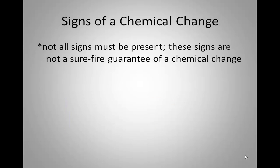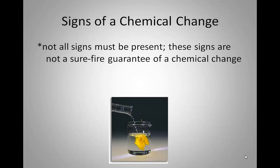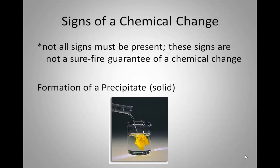Our last sign is probably the hardest to conceptualize because it's not something you see very often. If you take two liquids — two solutions — and in this example we start with two colorless solutions, pour them together, and all of a sudden there's a yellow solid in the solution — where did that come from? That's called a precipitate. So a formation of a precipitate, a solid forming from two solutions, is another sign of a chemical change.